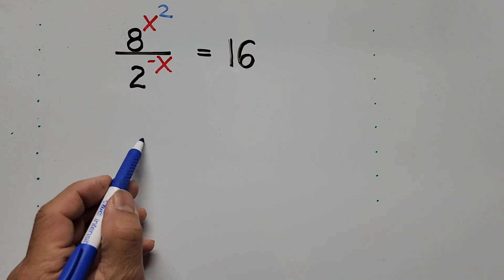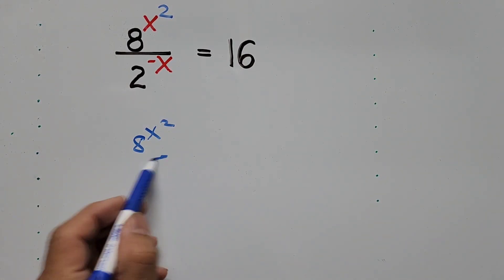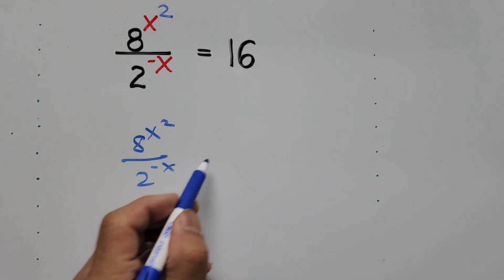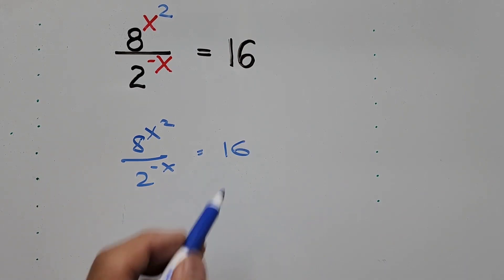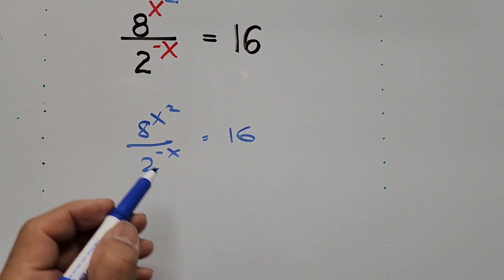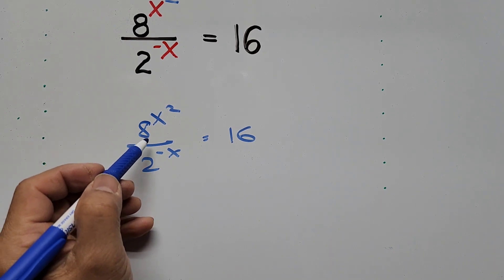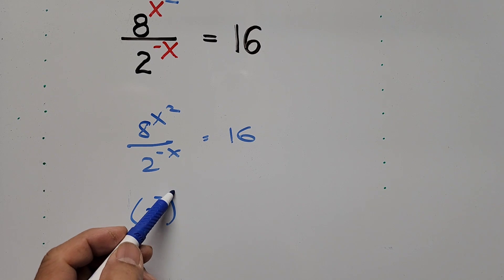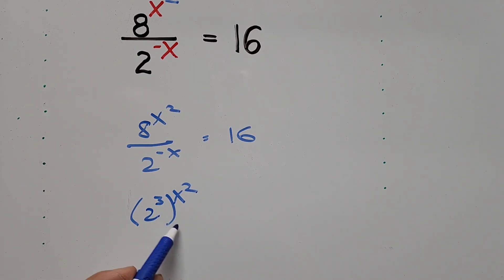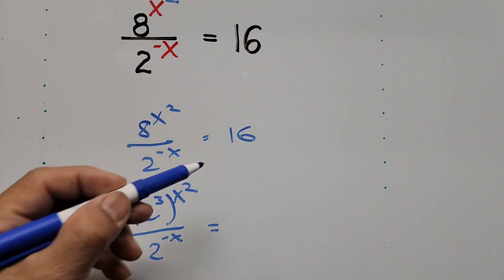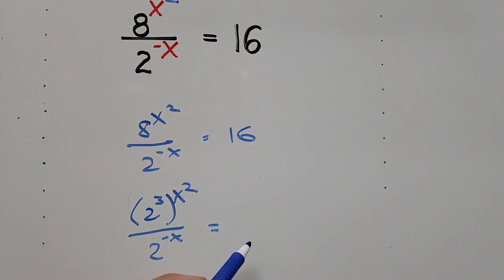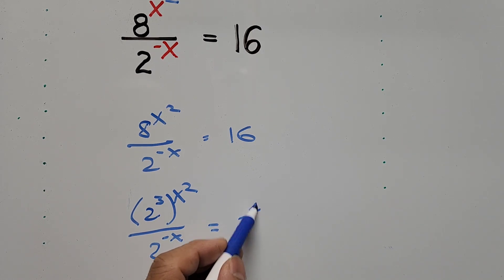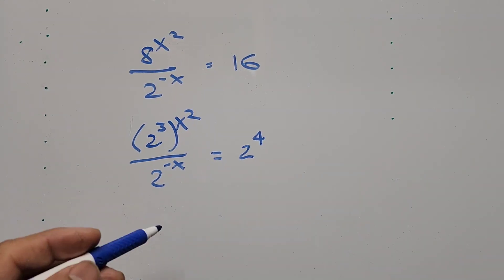So: 8 to the power of x squared divided by 2 to the power of negative x equals 16. On the left-hand side, the numerator — base 8 can be written as 2 cubed to the power of x squared, divided by 2 to the negative x. And on the right-hand side, 16 can be written as 2 to the power of 4.